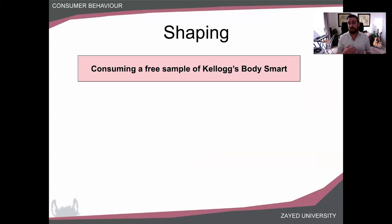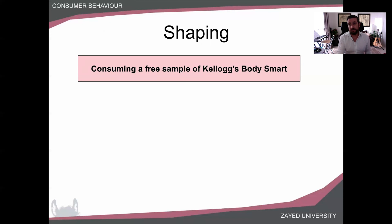Just because of that one instance of trying the product might not be enough for me to change the brand of cereal I like to buy — I always buy my same brand. So marketers often engage in what is called shaping. Shaping is where we're trying to shape people's behavior through baby steps, engaging in operant conditioning in small steps at a time.